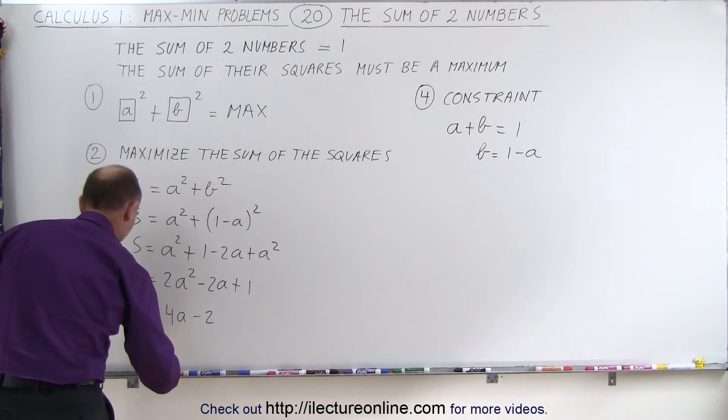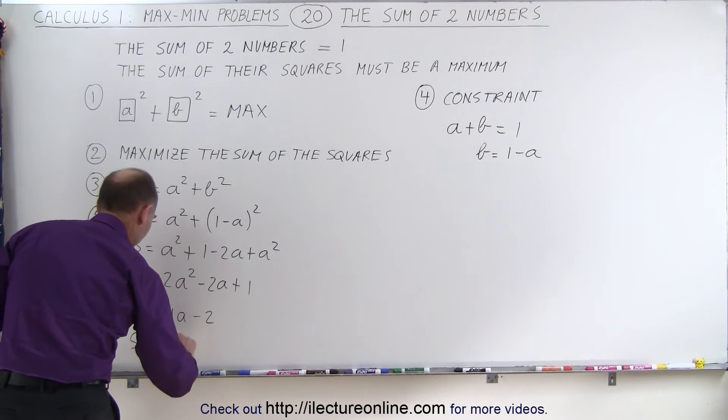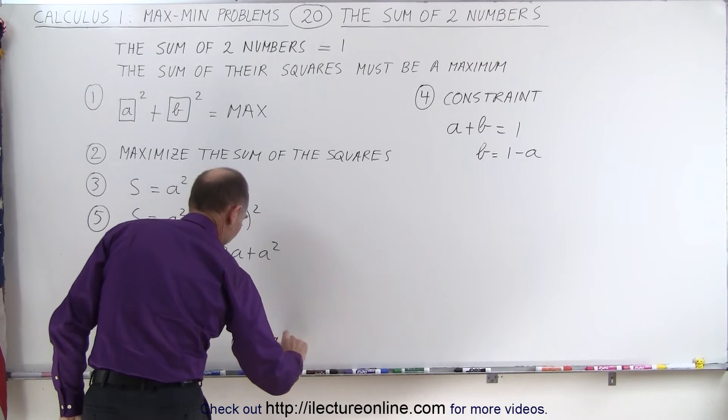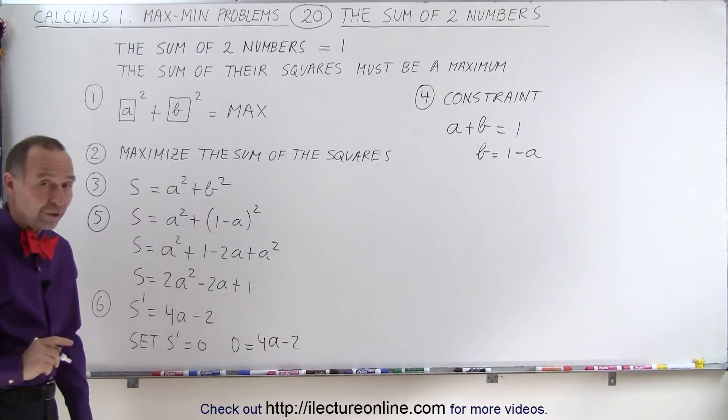And now we're going to set S prime equal to 0, which means 0 equals 4A minus 2. And now we solve that for A.